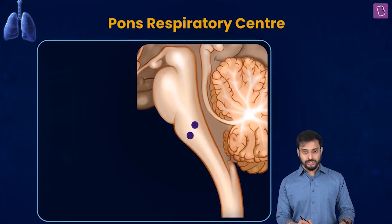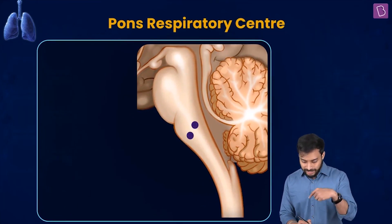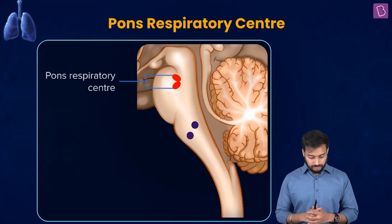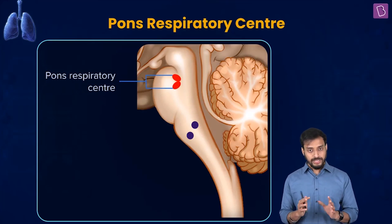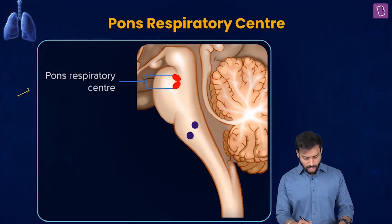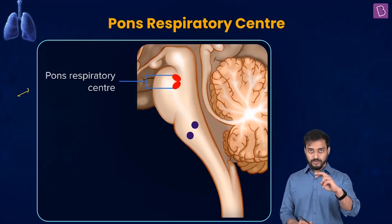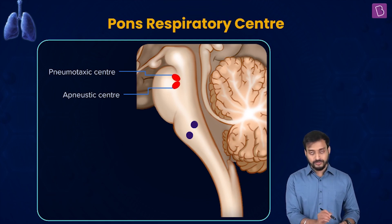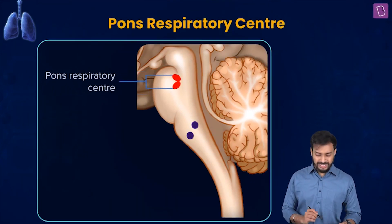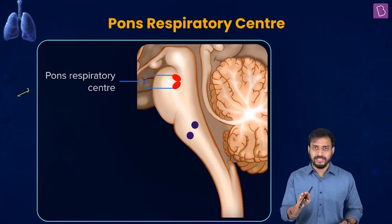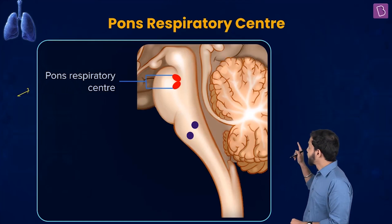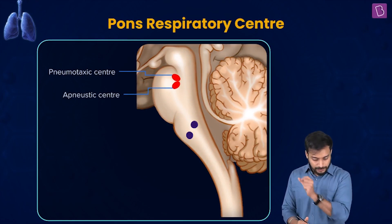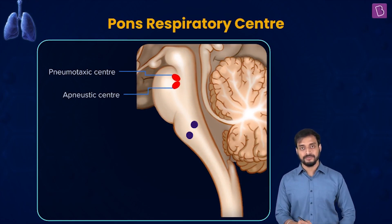Now let me talk about another center — the pons respiratory center. You see it — the pons respiratory center. It comprises of two centers: the pneumotaxic center and the apneustic center. Note this down — the names are a bit difficult but you'll grasp it slowly. The pons respiratory center comprises of the pneumotaxic center and the apneustic center.